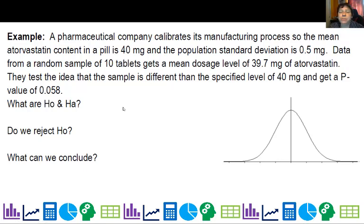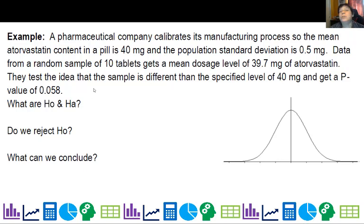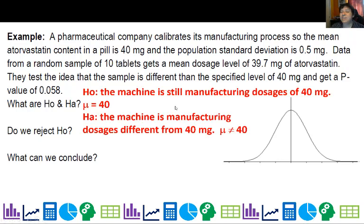Let's look at an example. A pharmaceutical company calibrates its manufacturing process so the mean atorvastatin content in a pill is 40 mg — that's a cholesterol medication — and the population standard deviation is 0.5 mg. Data from a random sample of 10 tablets gets a mean dosage level of 39.7 mg of atorvastatin. They test the idea that the sample is different than the specified level of 40 mg and get a p-value of 0.058. What are our null and alternate hypotheses? Well, our null hypothesis is that the machine is working — we should assume the machine is working; there's no reason to assume it's not. Our alternate is that it's not really giving us 40 mg. I've already calculated the p-value for you.